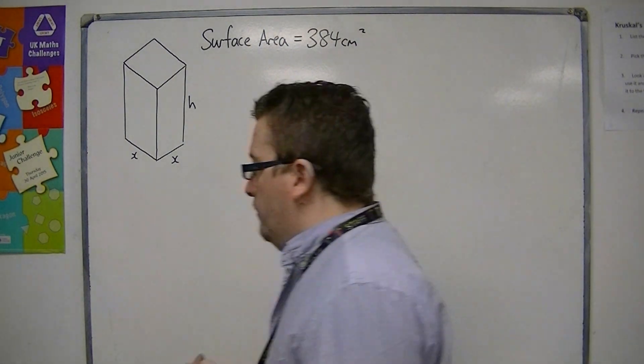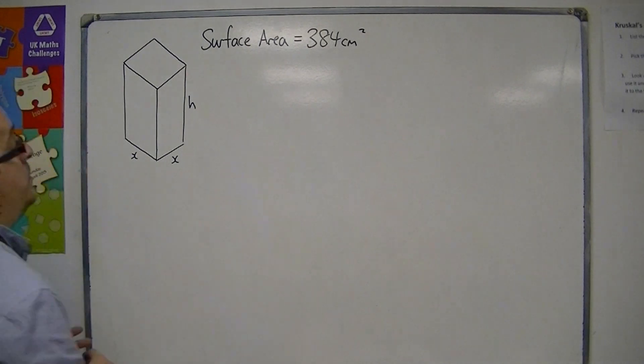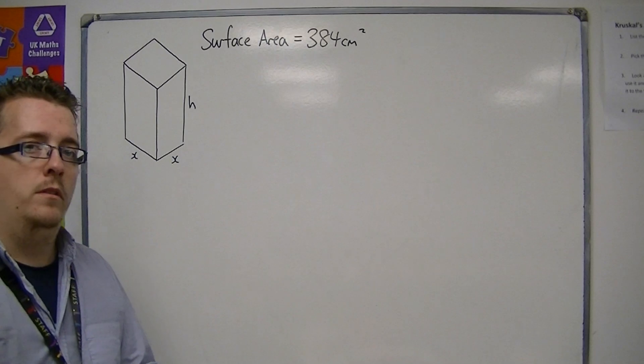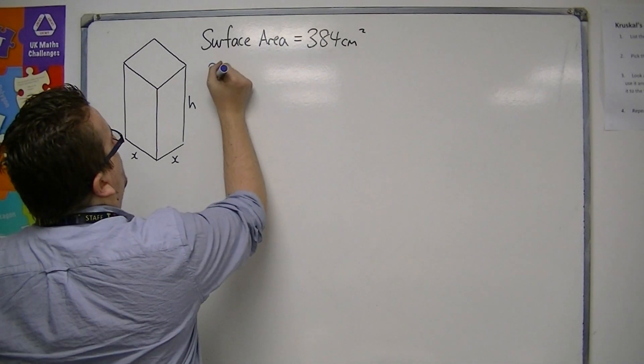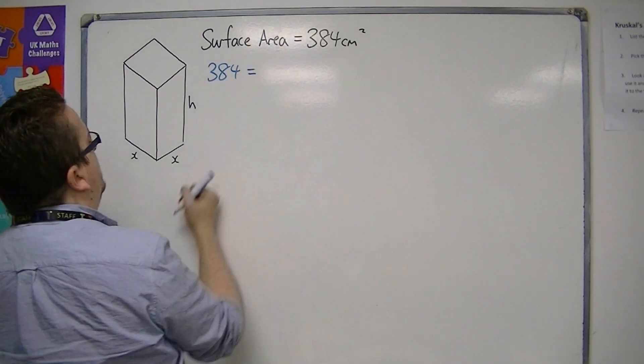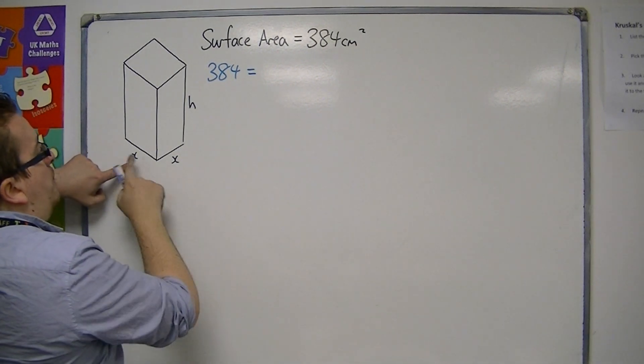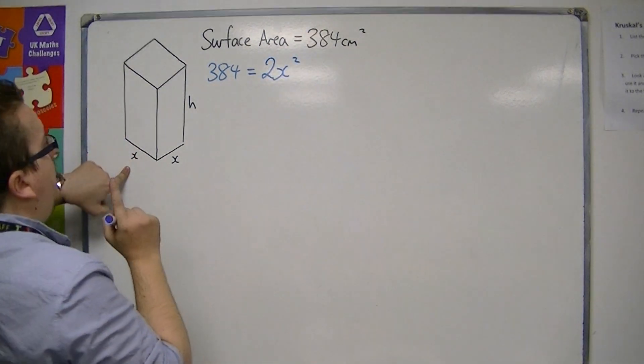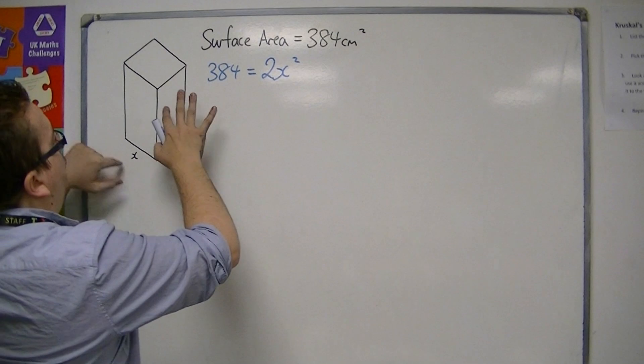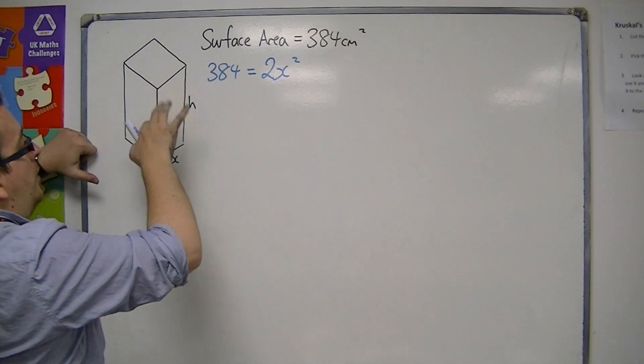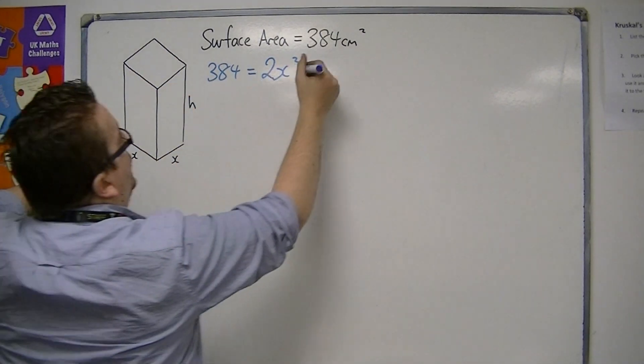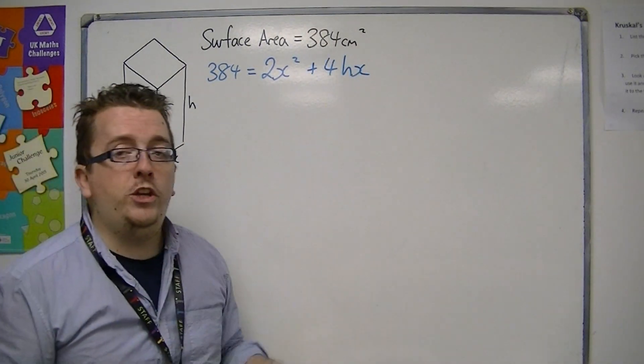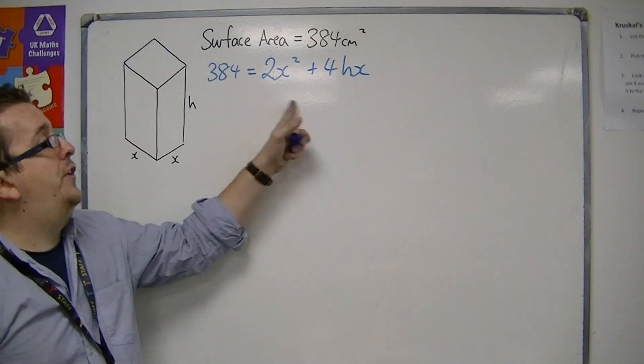Well first of all, because we've been given the surface area, we want to find an algebraic equation for the surface area. So 384 must be equal to, well we've got x squared on the bottom and on the top, so that's two lots of x squared. And we also have four sides around the box that is h times x, so four lots of hx. So this is an equation that links the surface area.